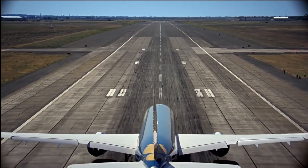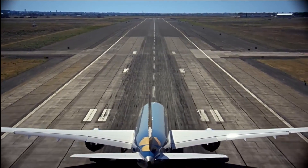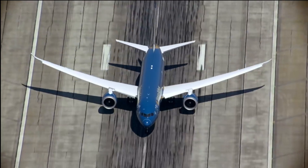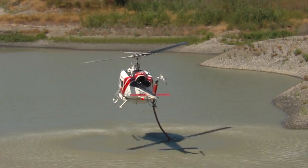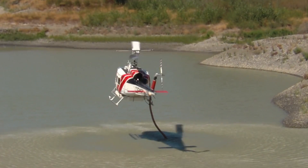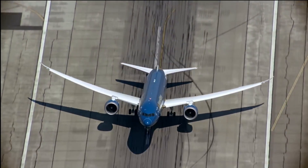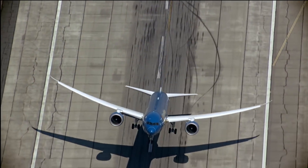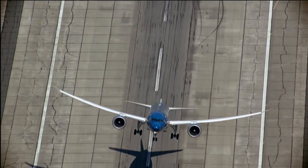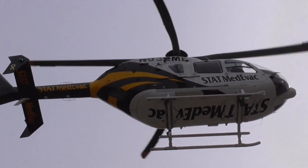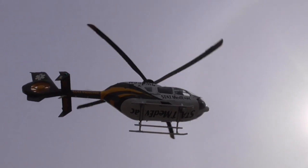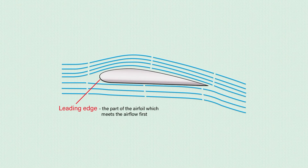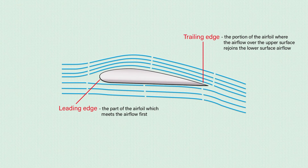The lift-producing surfaces of an aircraft, such as the wings of an airplane or the rotor of a helicopter, have an aerodynamically efficient shape called an airfoil. An airfoil provides the lifting force when it interacts with a moving stream of air. The profile of a conventional wing is an excellent example of an airfoil.